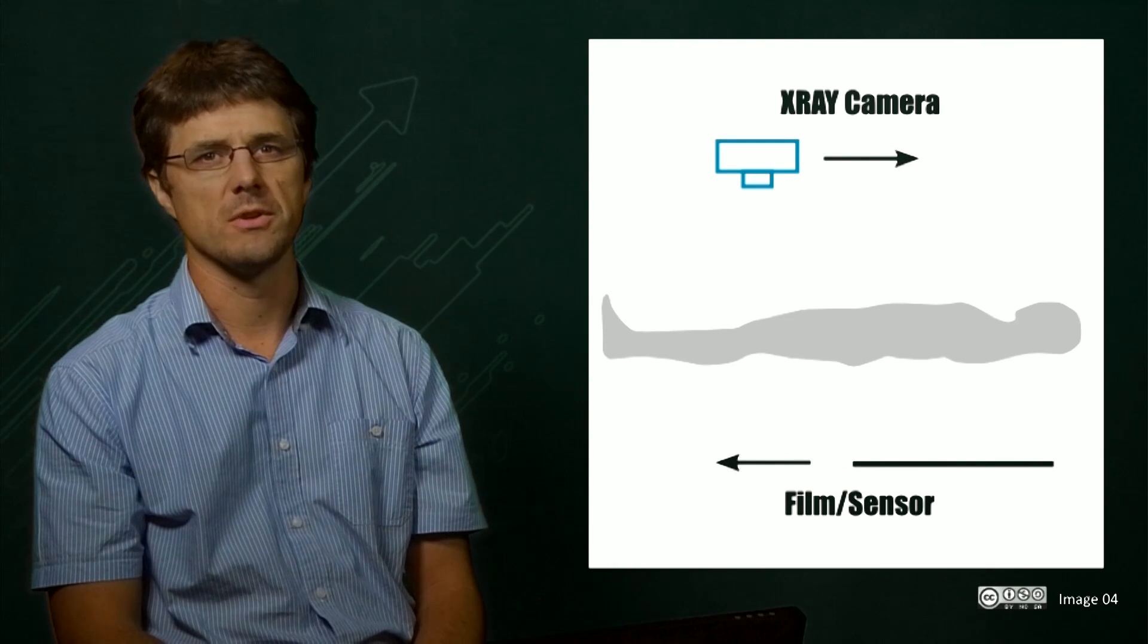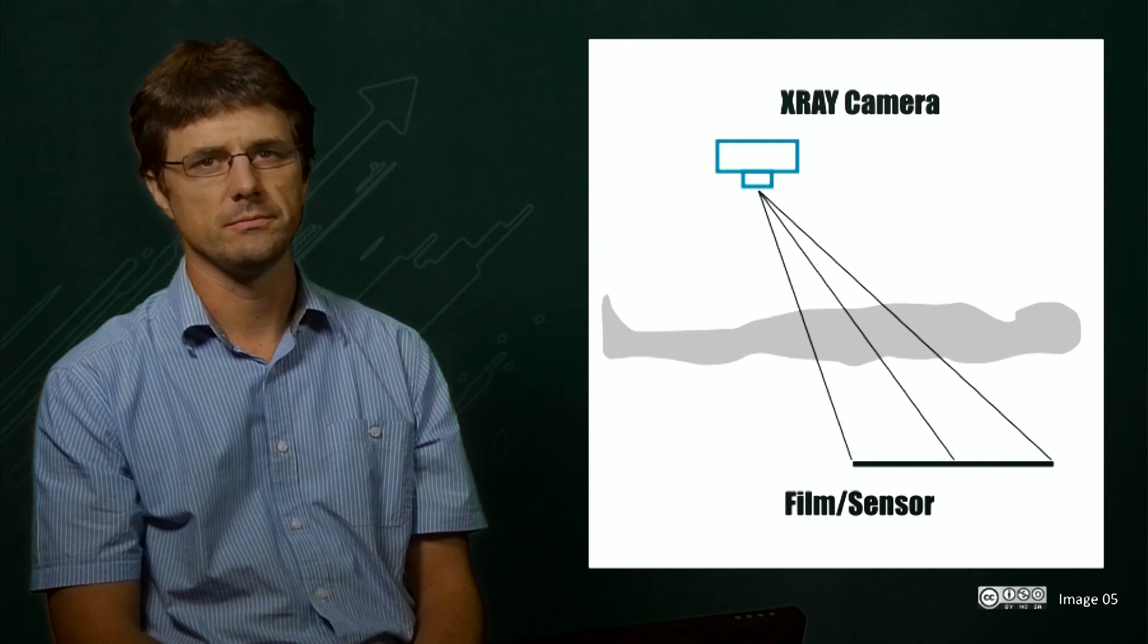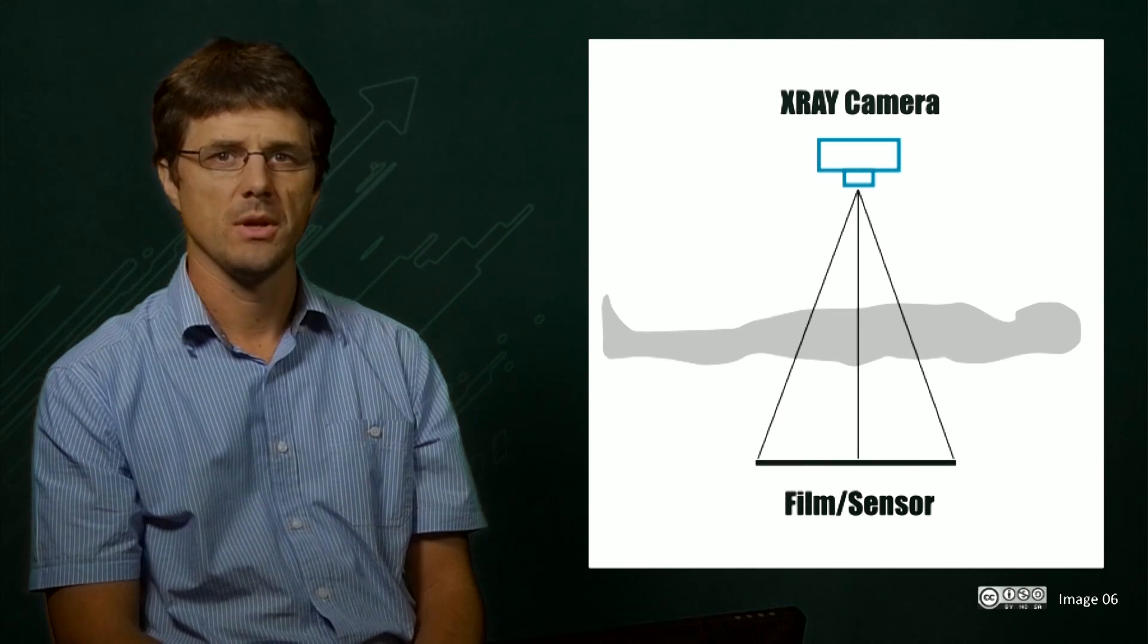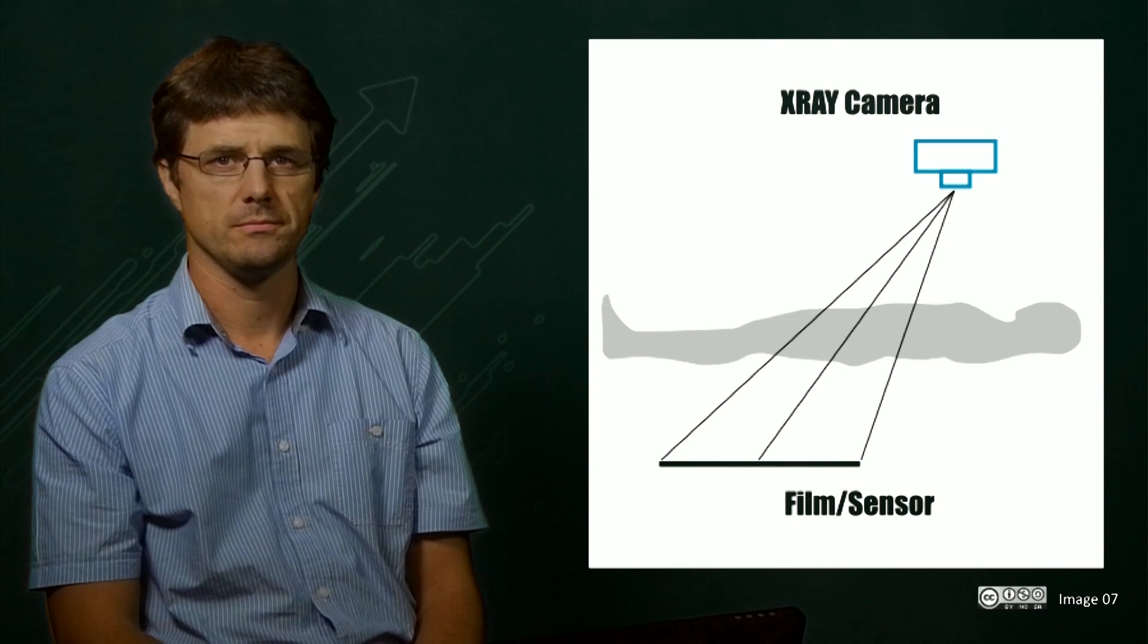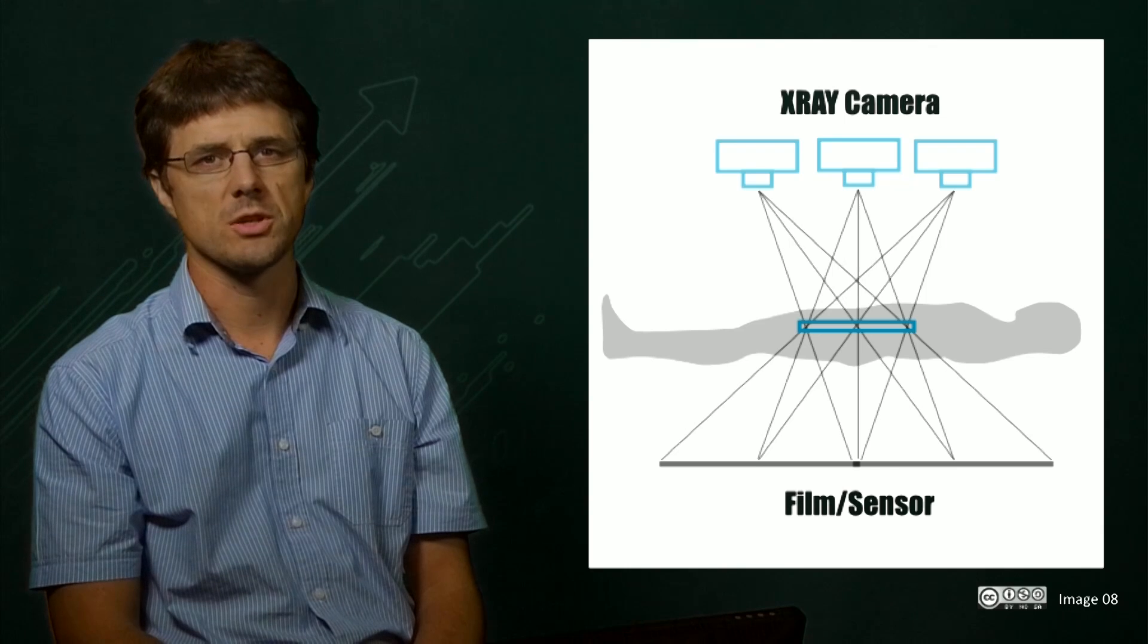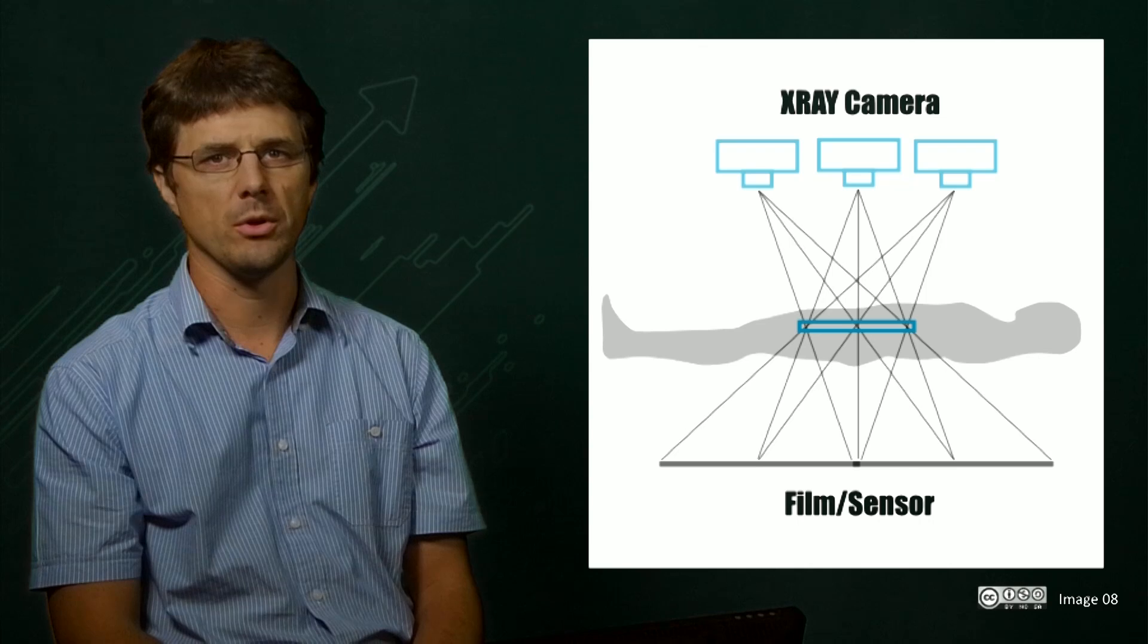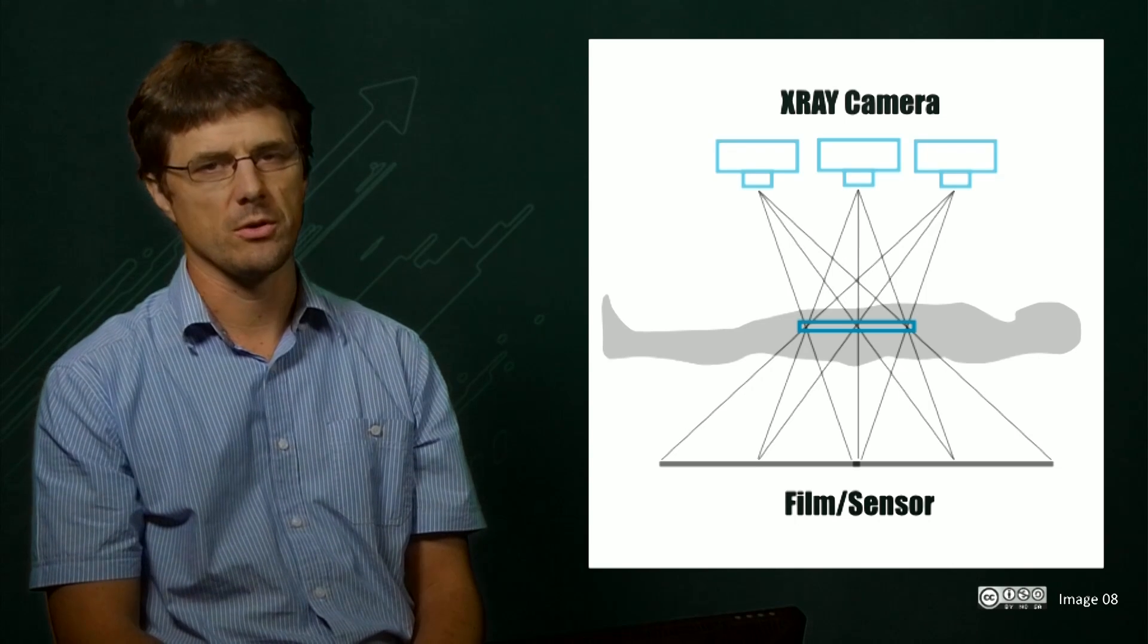We can get a better understanding of this by looking at how the image will be projected at one extreme, the centre, and the other extreme. By moving both the camera and the film, only a single plane will remain in sharp focus, whereas contrasts from above and below this plane will be blurred as its position will not be constant on the film.